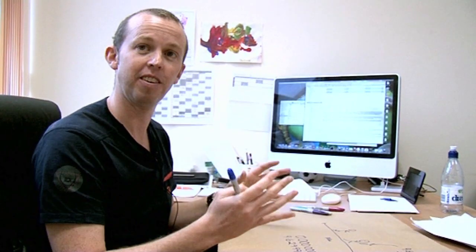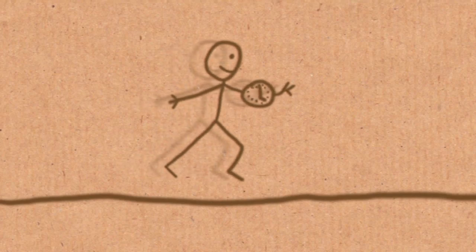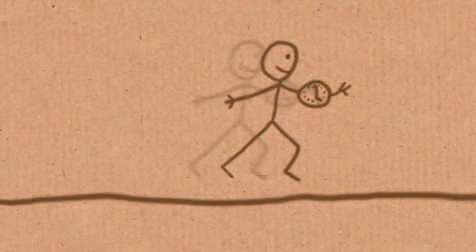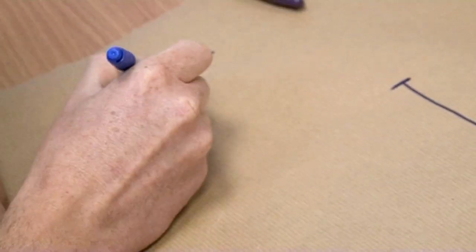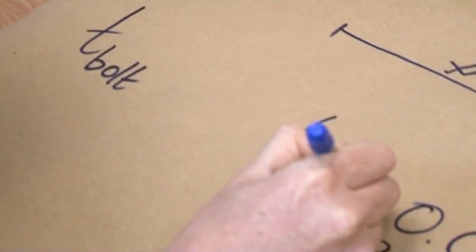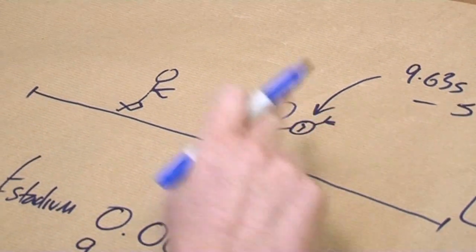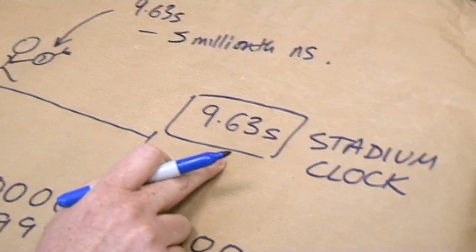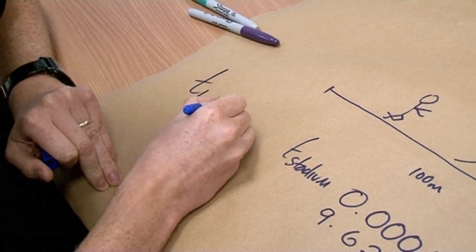Okay? So what actually happens is that when somebody's moving relative to something else, is that their clock slows down. And it slows down by a particular factor. So if we were to work out what Usain Bolt's time is, T-Bolt, and we were to compare it to T-Stadium, this is the time measured by Usain Bolt on his clock. This is the time measured by the stadium clock. And they differ by a factor. They're not the same.